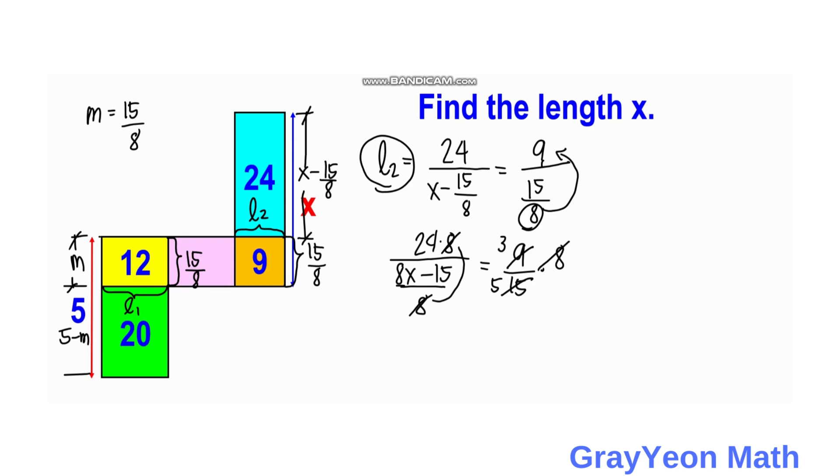So remaining is, if we cross multiply, we have 24 times 5 is equal to 3 times 8, 24X, minus 45. So simplifying we have 24 times 5 is 120, then is equal to 24X minus 45.